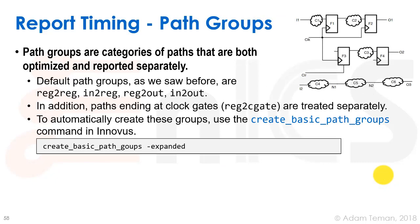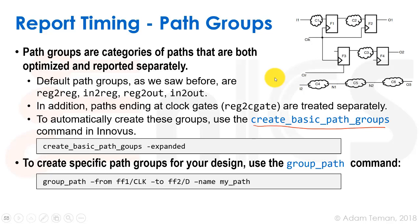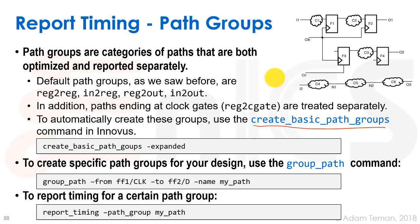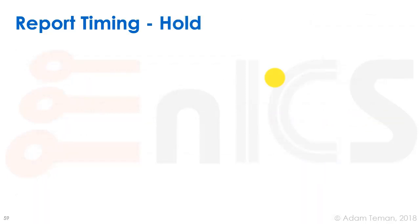Path groups help organize paths: we have in-to-reg, reg-to-reg, reg-to-out, and so forth. Paths ending at clock gates can be called reg-to-clockgate and treated separately. The create_basic_path_groups command creates path groups for all these different types, reporting and optimizing them separately. We can also create custom path groups using the group_path command — for example, 'group_path -from flip_flop_1/clock -to flip_flop_2/D' — to display and optimize that path group separately. Then 'report_timing -path_group my_path' reports only that group.